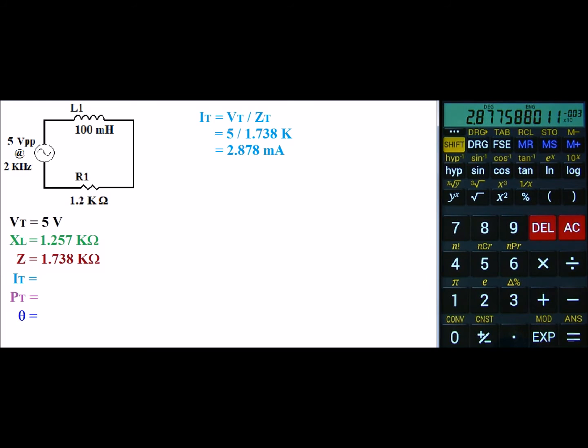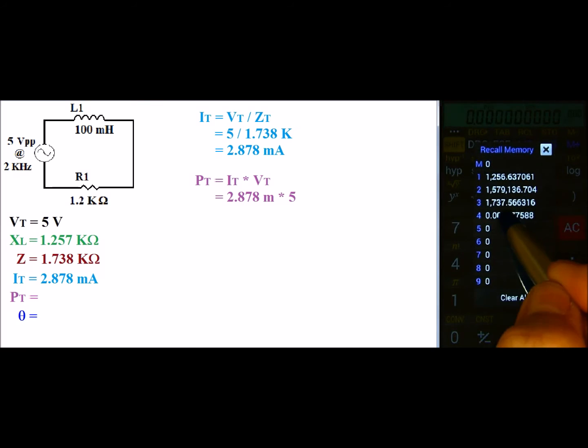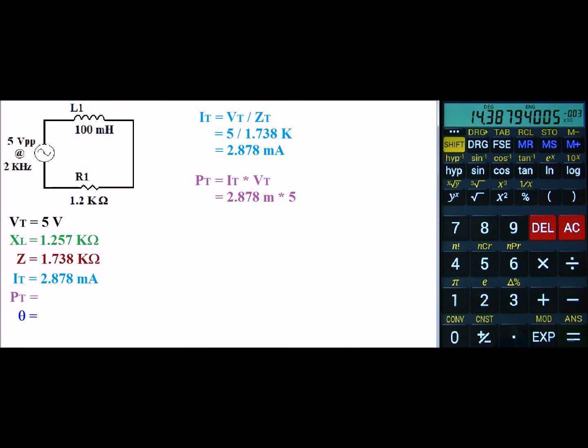And that gives us a value of 2.878 milliamps. And I'll go ahead and recall my current and multiply it times 5. And that gives us a power rating of 14.388.